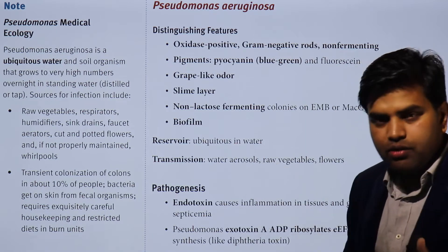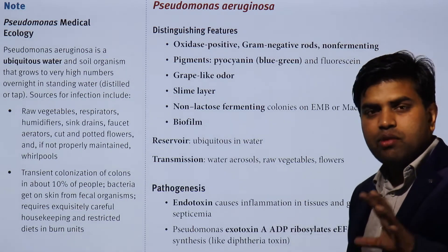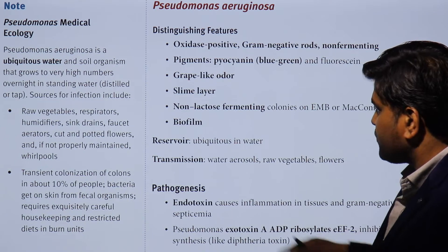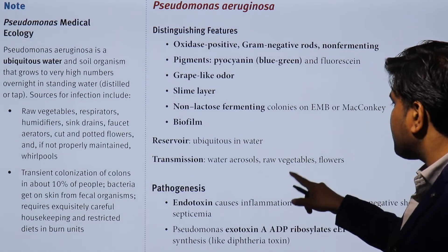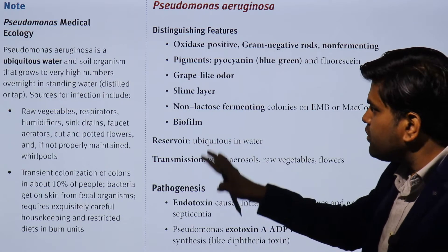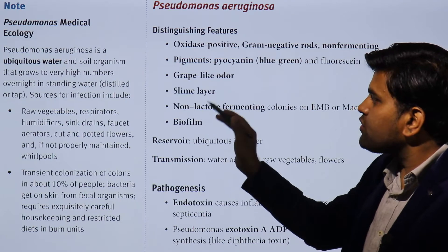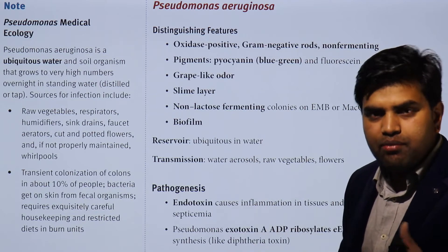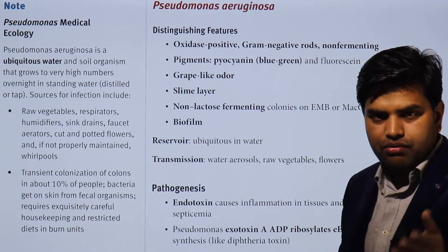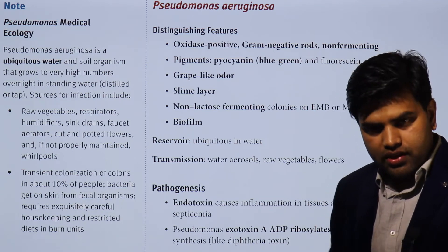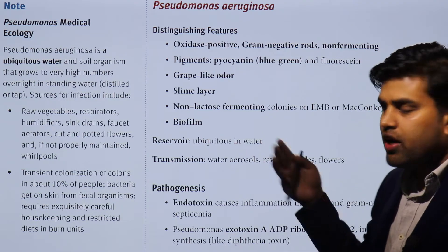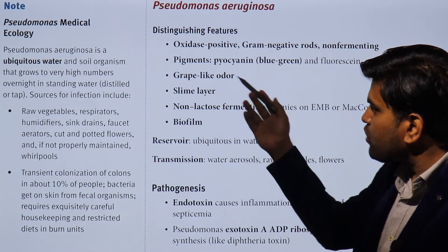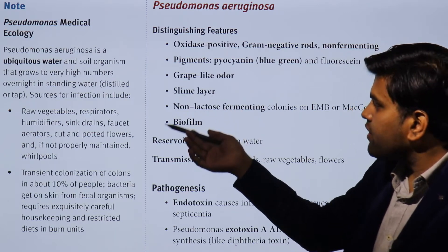Another important factor is that Pseudomonas can form biofilm, which makes it very difficult to eradicate and treat. Regarding its reservoir, it is found in water, aerosols, raw vegetables, and flowers. Medically, Pseudomonas is a ubiquitous water and soil organism that grows to very high numbers overnight in standing water. They are present everywhere, but with intact skin, they will not infect you. If there is a breach in skin — such as a cut or a burn — then contact with this organism can lead to infection.